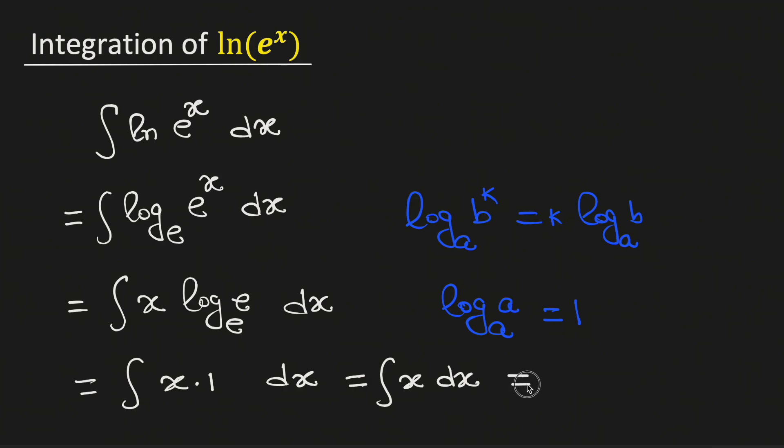Now by the power rule of integration, this will be equal to x square over 2 plus integration constant c. Therefore, the integral of ln of e to the x with respect to x is equal to x square over 2 plus integration constant c, and this is our final answer.